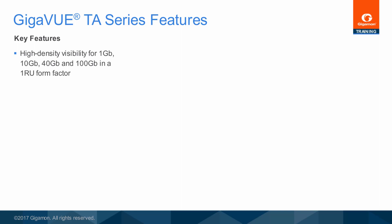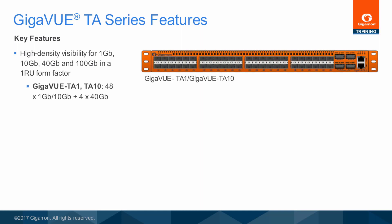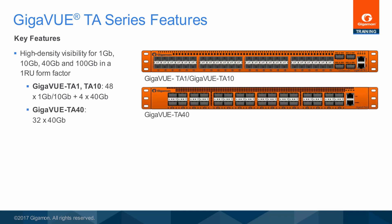The TA series nodes have the following key features. The Gigaview TA1 and Gigaview TA10 offer high-density visibility for 1 gigabit, 10 gigabit, and 40 gigabit in a 1RU form factor. The Gigaview TA10 is available in two configurations: one with all 48 ports enabled, and one with only the first 24 1 gigabit and 10 gigabit ports enabled, which can be upgraded via software license.